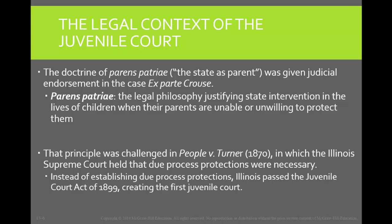In addition, the act required that the court be overseen by a special judge, that hearings be held in a separate courtroom, and that separate records be kept of juvenile hearings. By creating the juvenile court, the state was able to bypass the due process protections that were required by the Supreme Court for all adult cases.